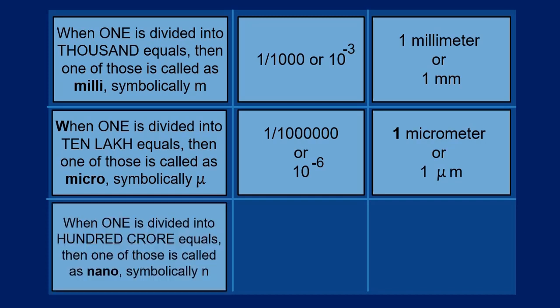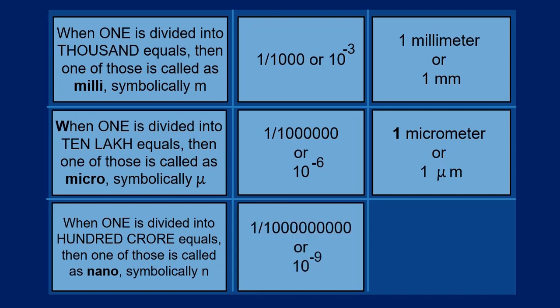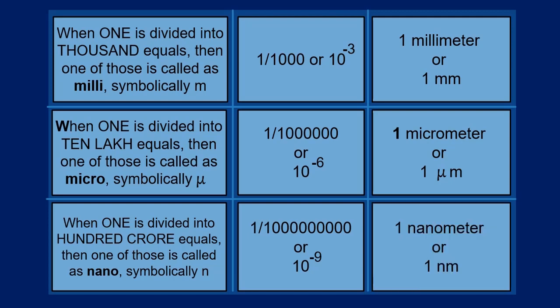When one unit is divided into 100 crores equal units, after division, each one is called as nano, represented with a small n. There are 100 crores of such quantities. In mathematics, symbolically, we write each of them as one divided by one followed with nine zeros, or ten raised to the power of minus nine. In physics, we call one of these equal units as one nanometer, written as one followed with a small letter n and a small letter m.